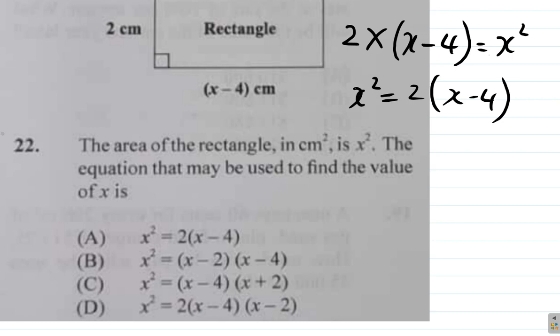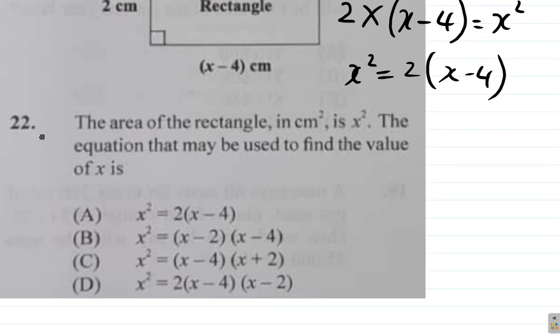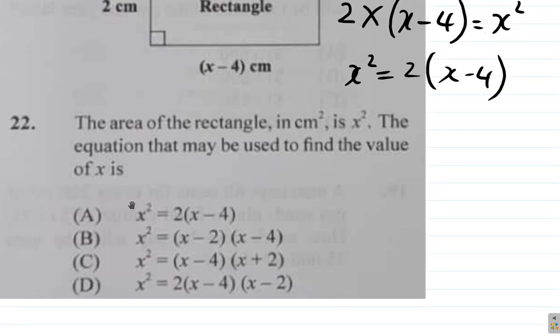So here, you can see what happened. The answer to this question is x squared equals 2(x minus 4).